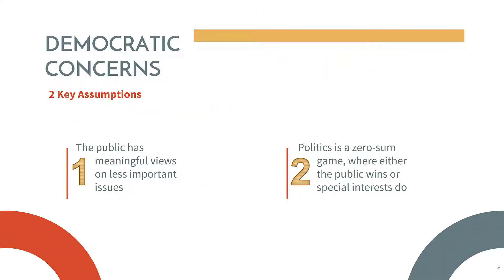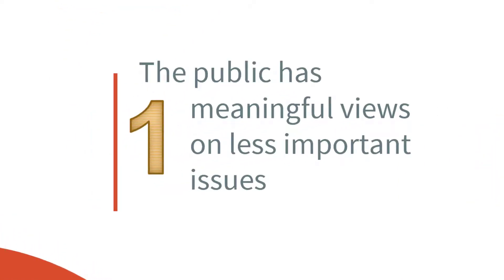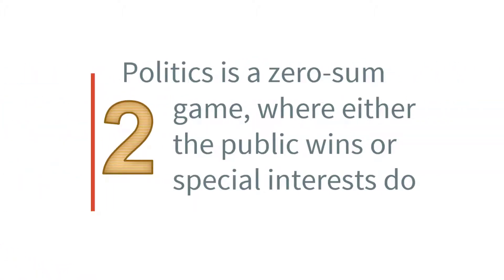The claim that a weak link between public opinion and public policy means democratic institutions are not functioning well rests on two key assumptions. First, that the public has meaningful views on less important, low-salience issues. Second, that politics is a zero-sum game — either the public gets what it wants or special interests do. If the public isn't being consulted on issues they care about, special interests fill that gap at the public's expense.